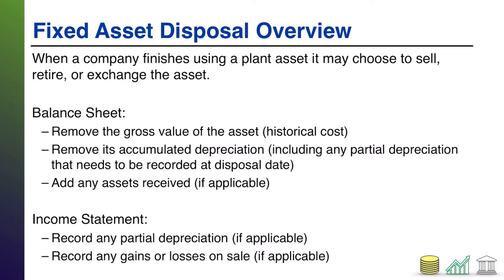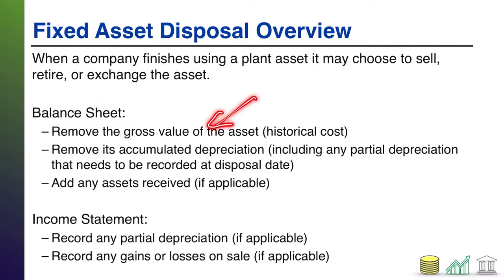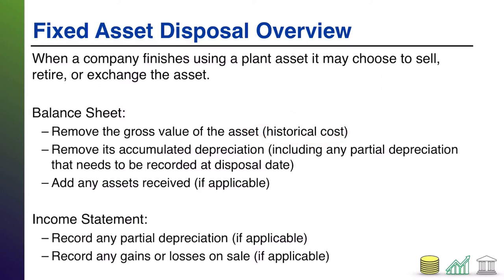So what happens from a financial statement perspective? Let's start with our balance sheet. You've got to remove the gross value of the asset. So if it's a building, you've got to get rid of the building account; if it's equipment, the equipment account; if it's land, the land account. Whatever that historical cost sitting in that main asset account, you've got to get rid of that. Assets are debits, so to get rid of them you're going to credit the account — credit the asset, and that'll eliminate it.